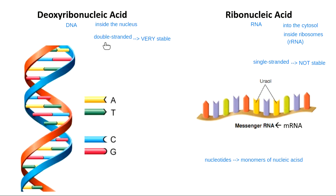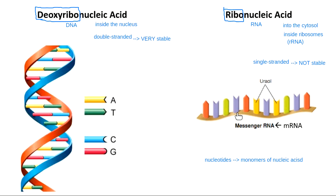DNA is double-stranded, inside the nucleus. RNA is single-stranded, mostly in the cytosol and some in ribosomes. Another important difference is the beginning of their names: DNA is called deoxyribonucleic acid, RNA is called ribonucleic acid. These molecules get their name from the kind of sugar in the backbone. In RNA we have ribose sugar; in DNA we have deoxyribose sugar.